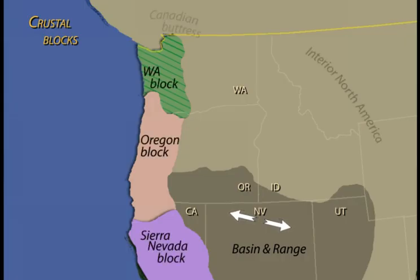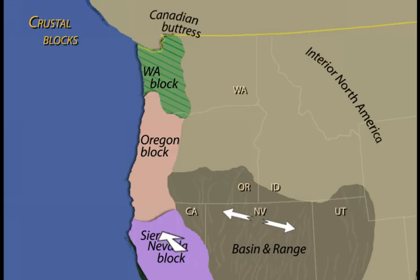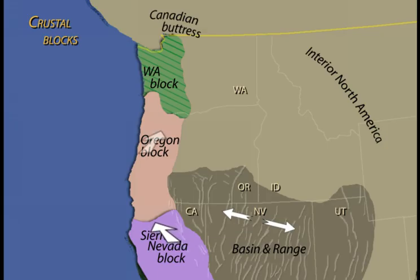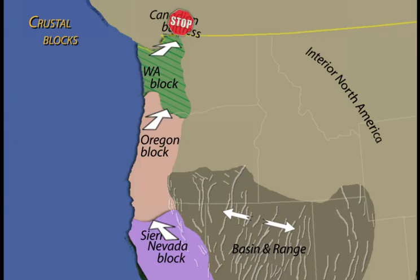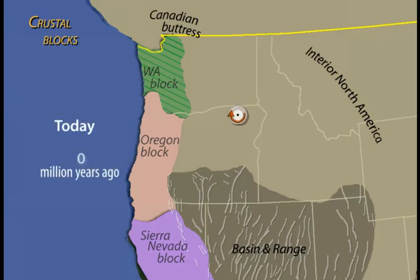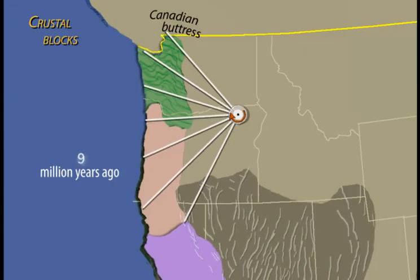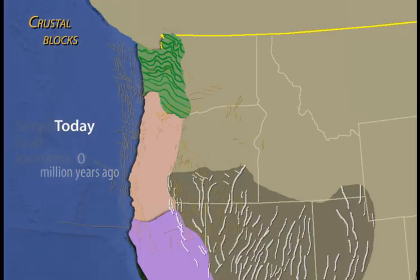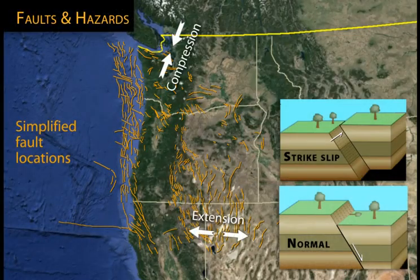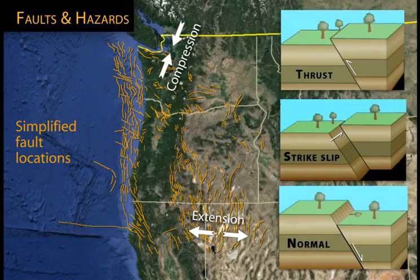Basin and range extension stretches from Utah into southeastern Oregon. To the west, the Sierra Nevada block, dragged north-northwest by the Pacific plate, is pushing on the Oregon Coast Range block, which in turn pushes on the Washington crustal block. The resisting Canadian coast mountains halt the motion. These forces rotate much of western Oregon and Washington slowly around a pivot point in northeast Oregon. Unwinding 16 million years lets us see the permanent deformation caused by this rotation, which has broken the crust by normal, strike-slip, and thrust faults with motion histories that are the focus of ongoing research.